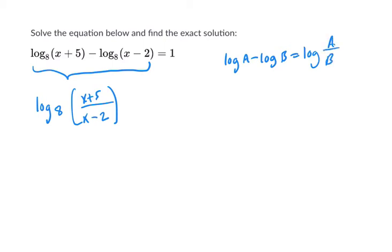And here we can see that would have to equal 1. You might feel stuck at this juncture, but remember you always use the definition of a log. This just means 8 to the first power equals this thing right here. So we can rewrite that: 8 to the first power equals x plus 5 over x minus 2.